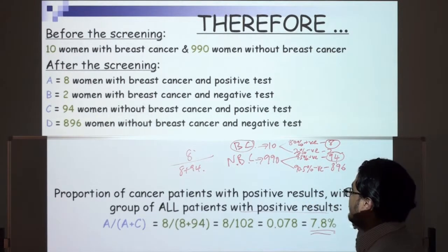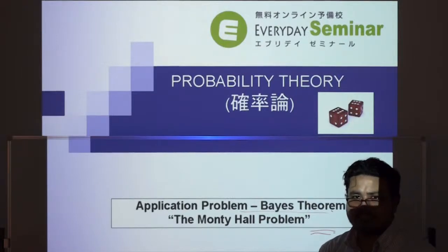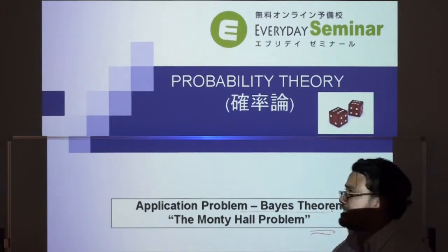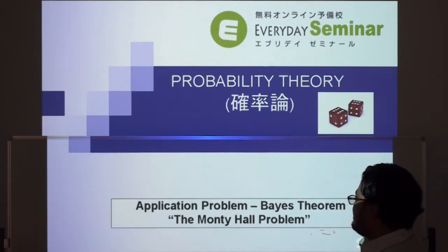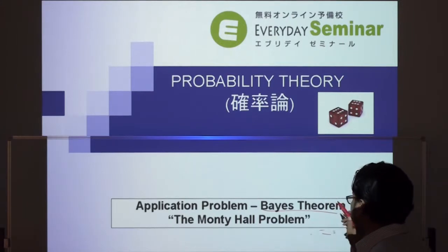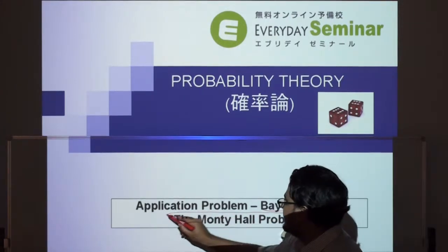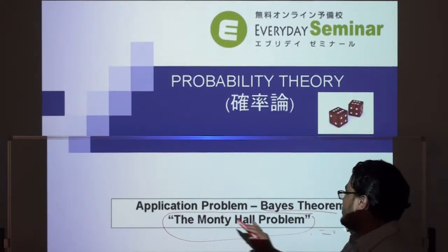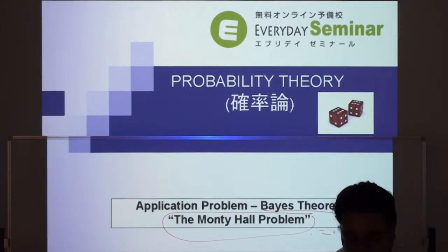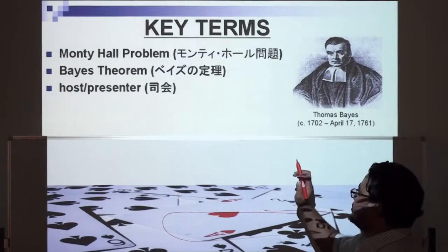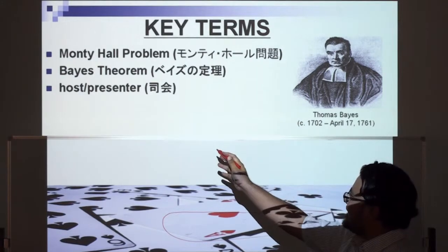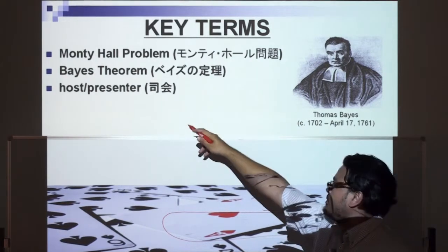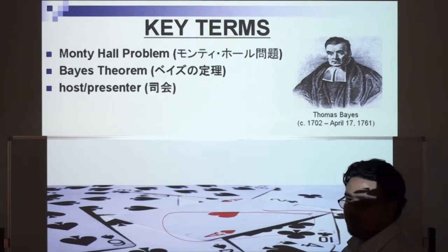Now let's move on to today's topic. Today's math lesson with Everyday Seminar is probability theory again, and we're going to be doing an application problem of Bayes' theorem. In fact, this is one of the most important problems in statistics — the very famous Monty Hall problem. Key terms for today: the Monty Hall problem, Bayes' theorem, and I thought I'd add: a host or presenter.